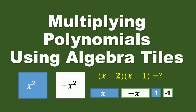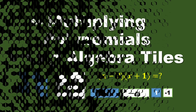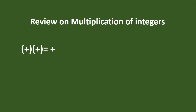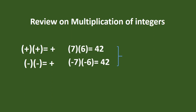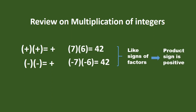The prerequisite is that you already know how to multiply integers and how to multiply involving variables. If we multiply two positive integers, the product is positive — for example, 7 times 6 equals 42. If we multiply two negative integers, the product is also positive — for example, negative 7 times negative 6 is 42. This rule involves like signs of factors, and the product is always positive.